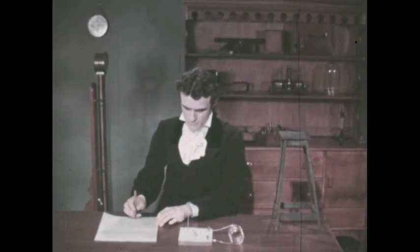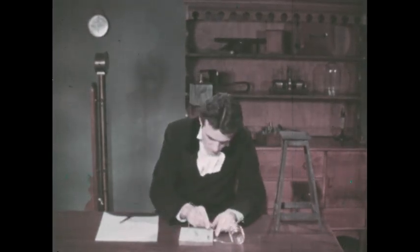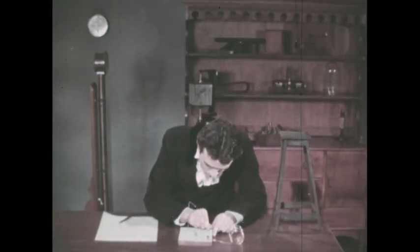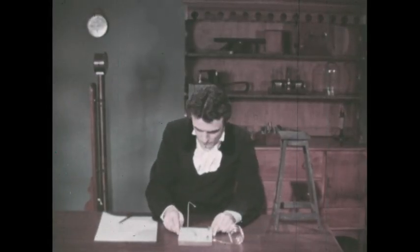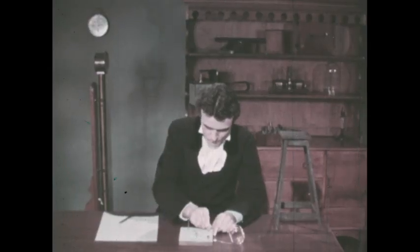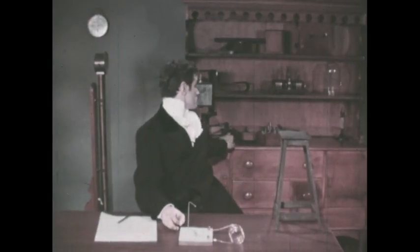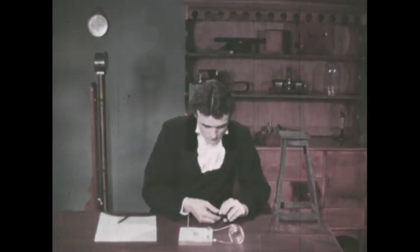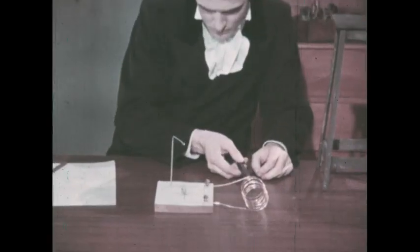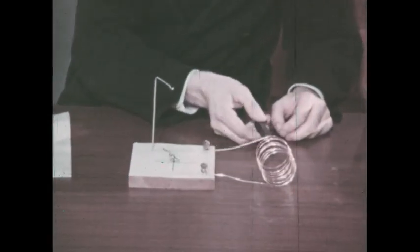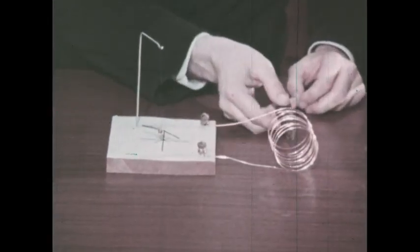We have seen that an electric current can produce magnetism. Now we will see that magnetism can produce an electric current. Over a hundred years ago, the English scientist Michael Faraday thrust a magnet into a coil of wire attached to an electric meter. The needle moved. An electric current was produced in the coil.